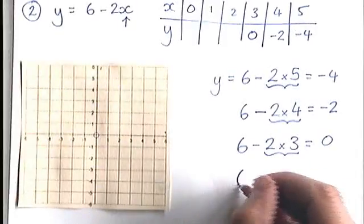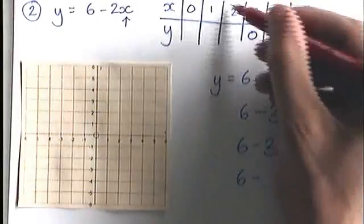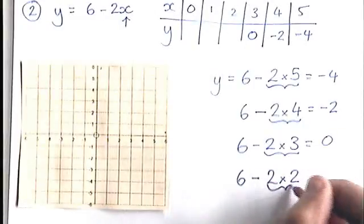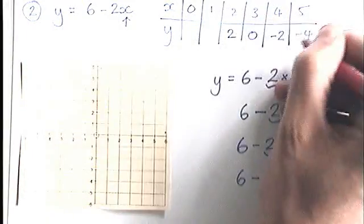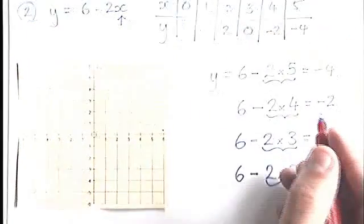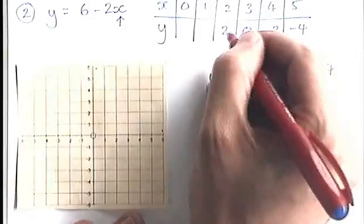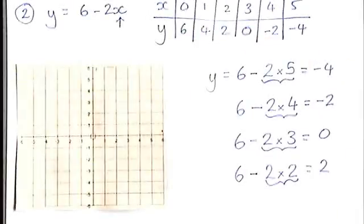Hopefully you can see the pattern that's forming here. We'll do one more. 6 take away, what's my next x number? 2 lots of 2. That's 6 take away 4, which is 2. And you can see the pattern is indeed going up in 2s as we work backwards. Minus 4, minus 2, 0, 2, 4, and 6, like that.